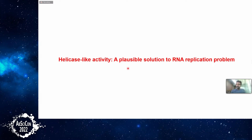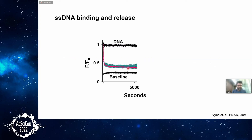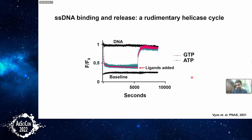We mentioned these fragments bind NTPs and single-stranded DNA both via the phosphate-binding loop. Can we have some kind of exchange between the two ligands? It turns out we can. We see a decrease in fluorescence upon adding proteins — the DNA molecules are completely bound. When we add ligands like GTP and ATP, the bound proteins release, allowing the DNA to revert back to its initial state — increasing fluorescence — resembling a rudimentary helicase cycle. Modern helicases use energy of ATP hydrolysis to unwind DNA and release. These prototypes also show such helicase-like cycles.